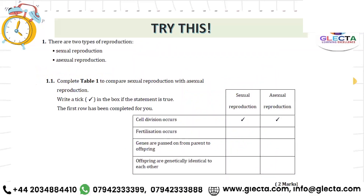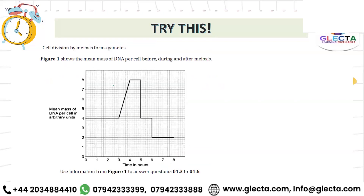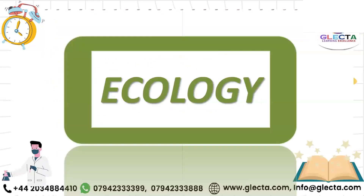There have been questions based on sexual reproduction where you have to complete a table, so we need clarity on those differences. In flowering plants the male gamete is called pollen. Questions based on meiosis have also appeared multiple times in past papers. Our last unit is ecology.